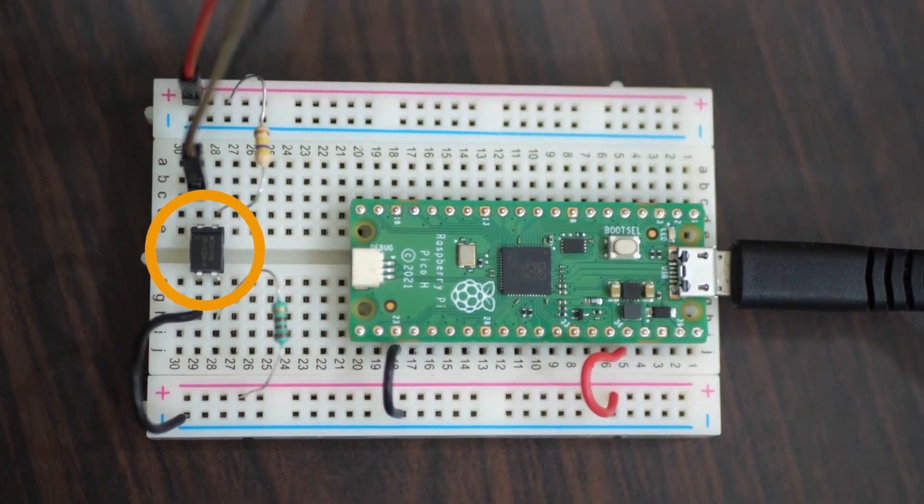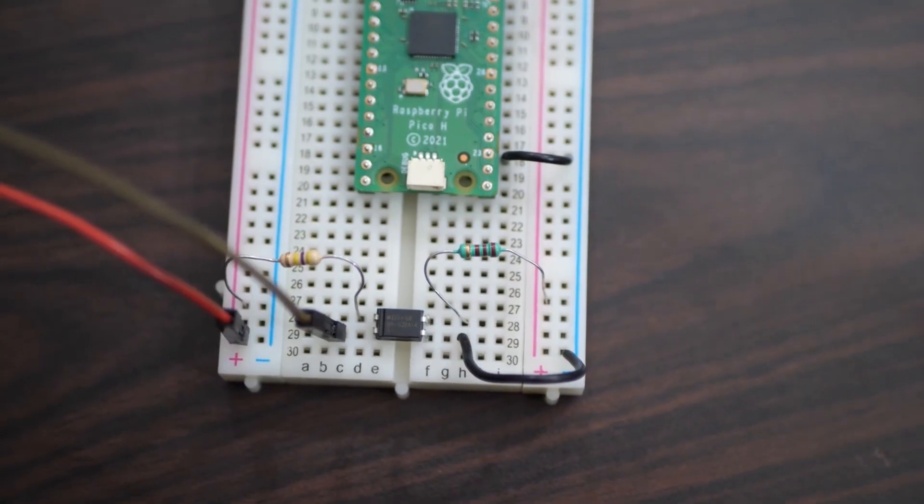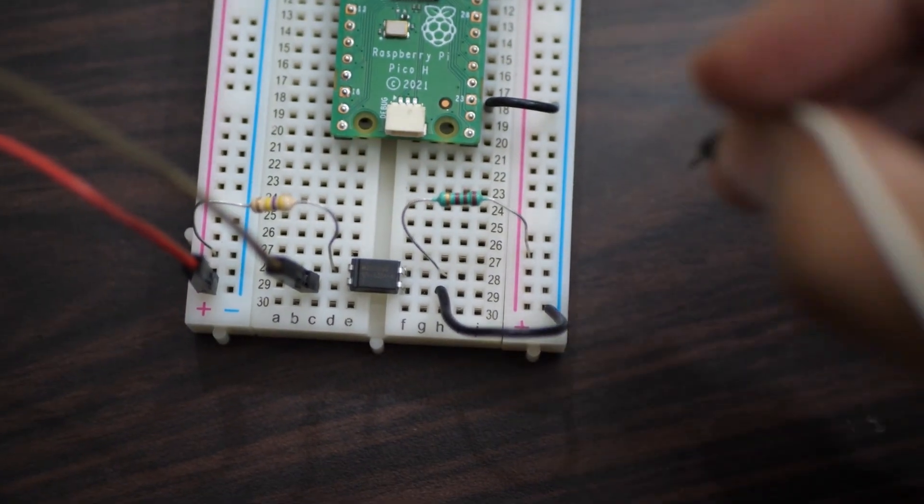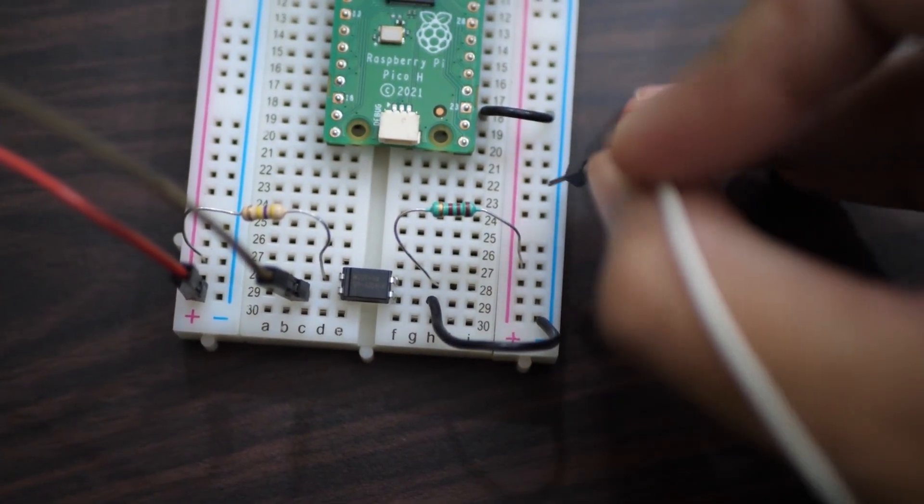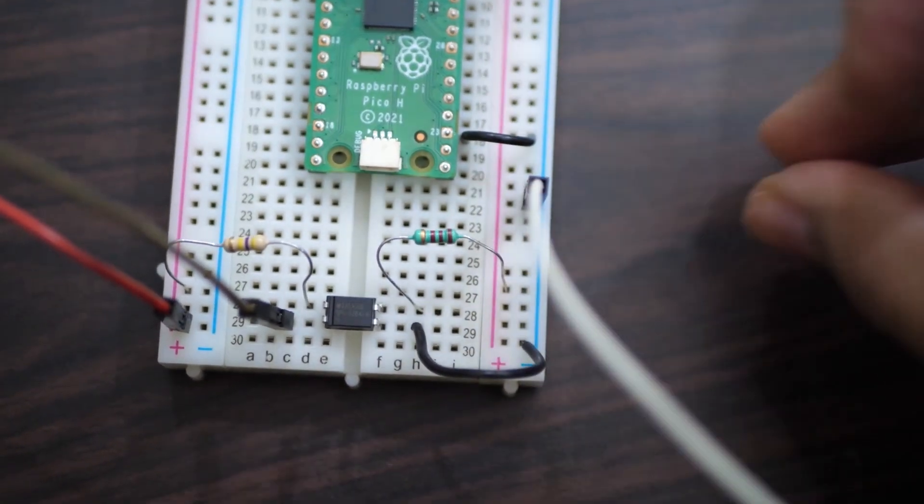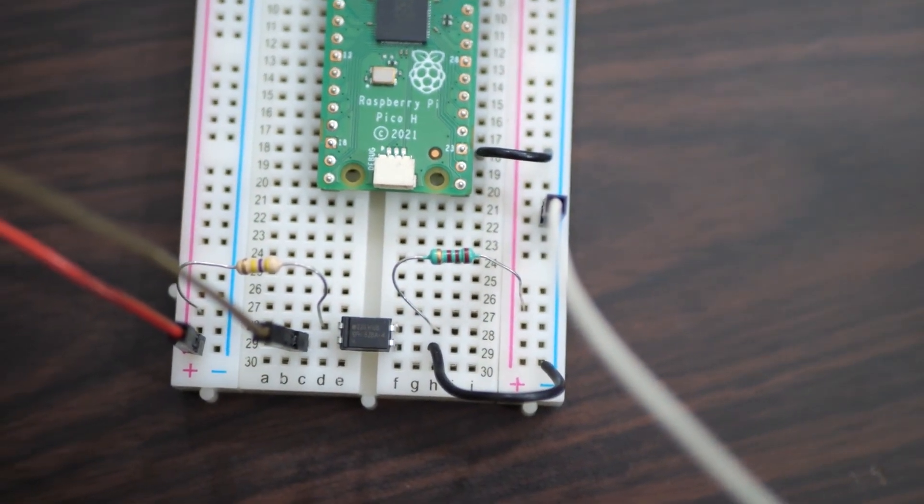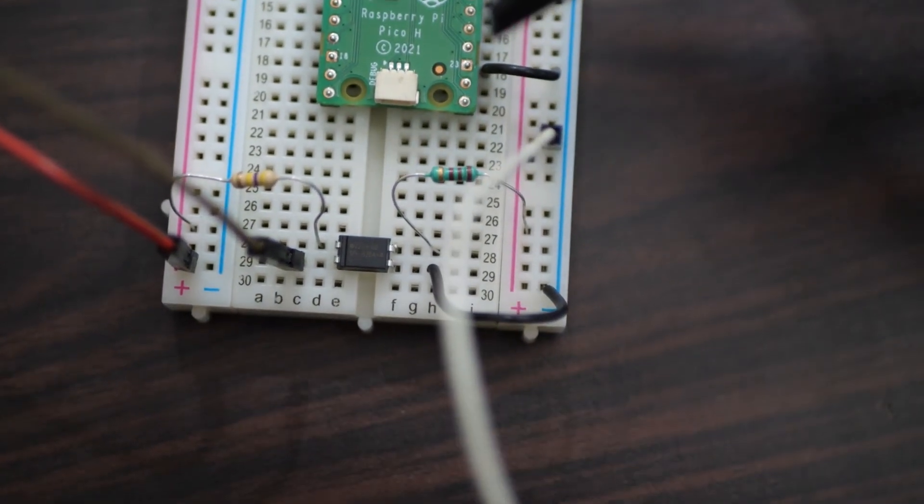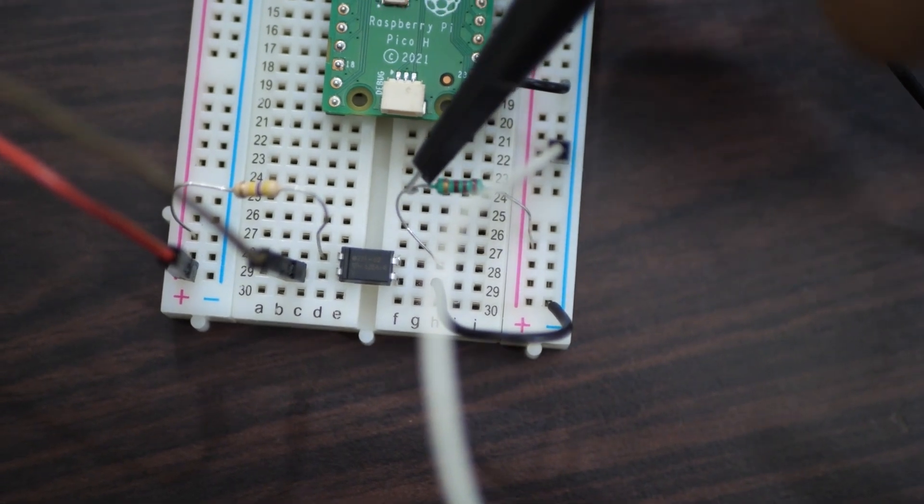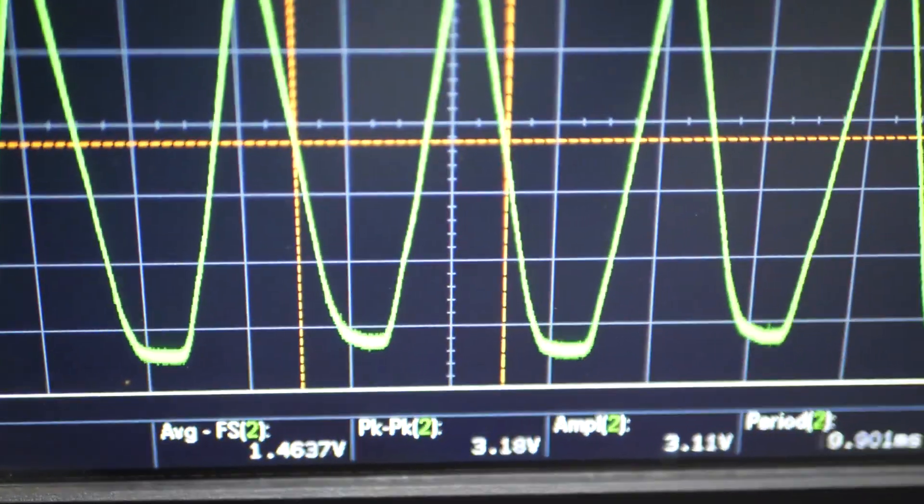This is the SFH628 optocoupler IC. One of two LEDs are always forward biased for an alternating signal. Only time both the LEDs are in the off state is when the input waveform is within some threshold bounds of the zero crossing. This threshold depends upon the forward voltage of the diode.